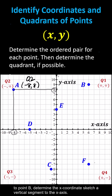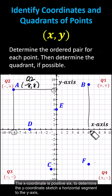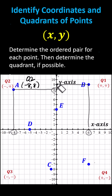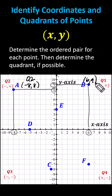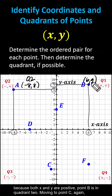Moving to point B, to determine the x coordinate, sketch a vertical segment to the x axis — the x coordinate is positive 6. To determine the y coordinate, sketch a horizontal segment to the y axis — the y coordinate is positive 9. The ordered pair for point B is 6 comma 9. Because both x and y are positive, point B is in quadrant 2.